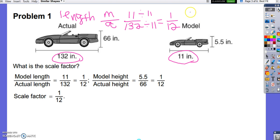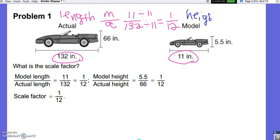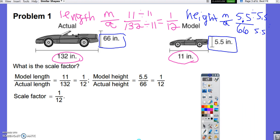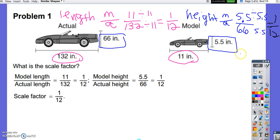So now let's do the same thing with the height. We're going to do model over actual. The height of the model is 5.5 and the height of the actual is 66. So we are going to divide the numerator and the denominator by 5.5, and we are going to get 1 over 12. So what is the scale factor? 1 over 12. The numerator is 1, so this is a reduction.